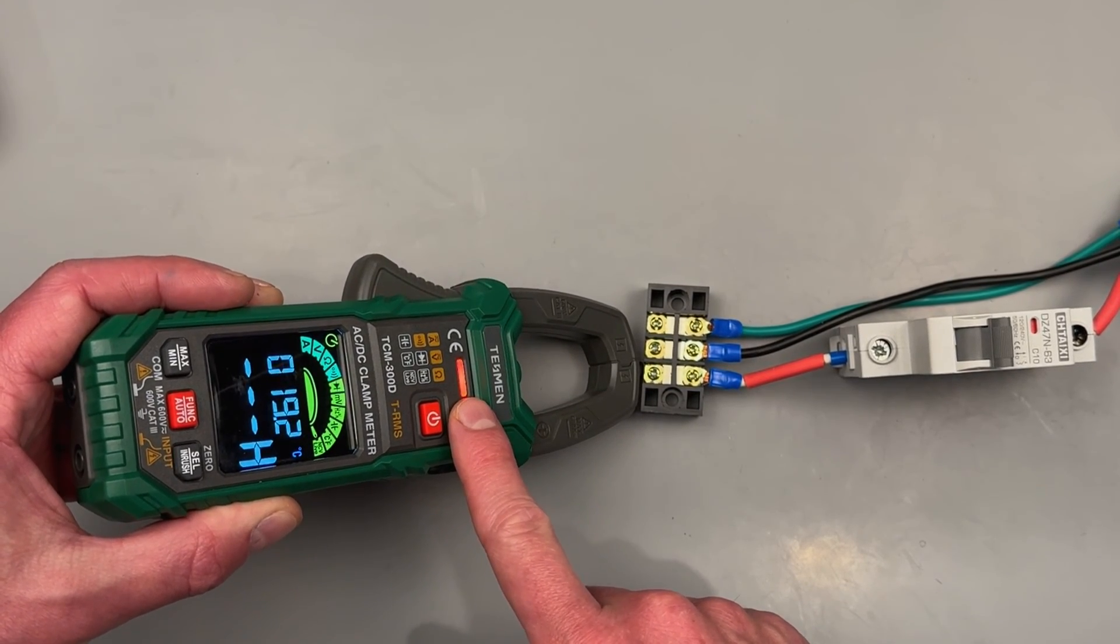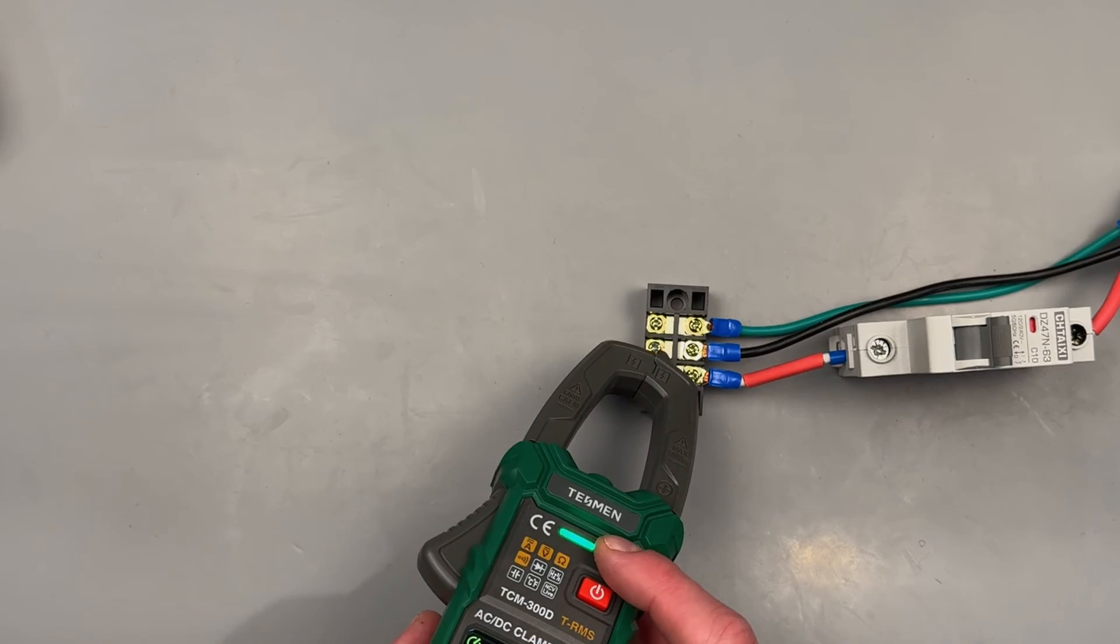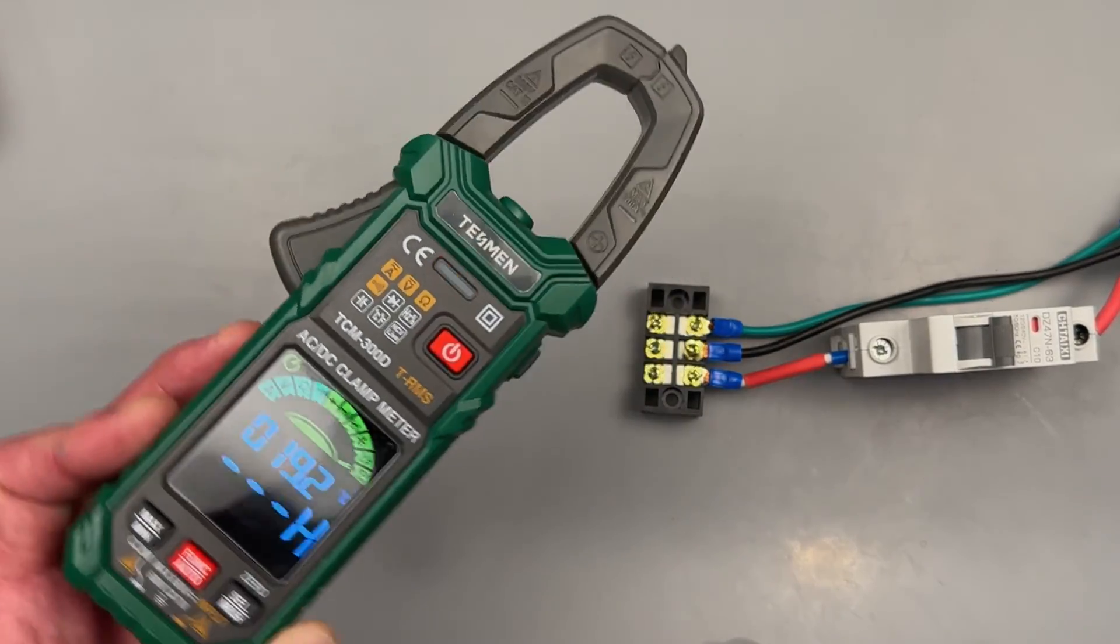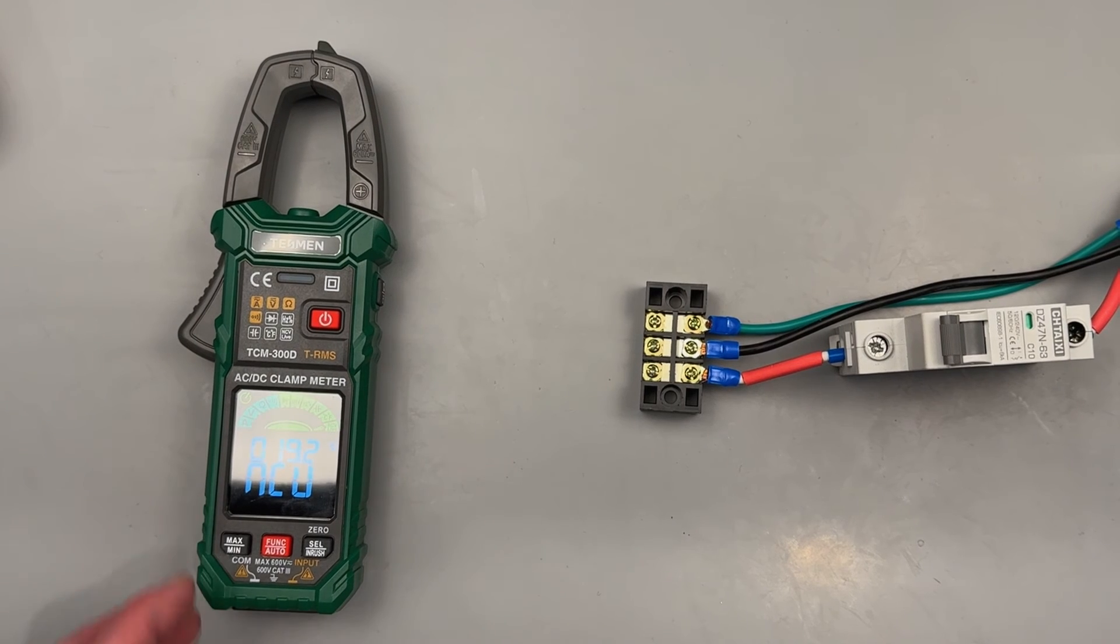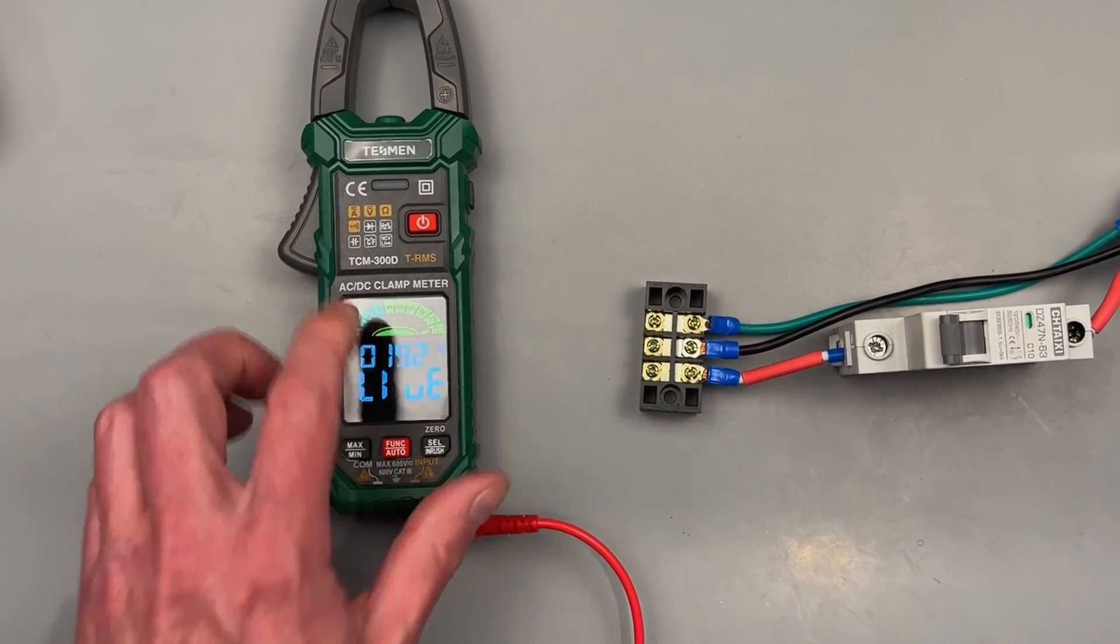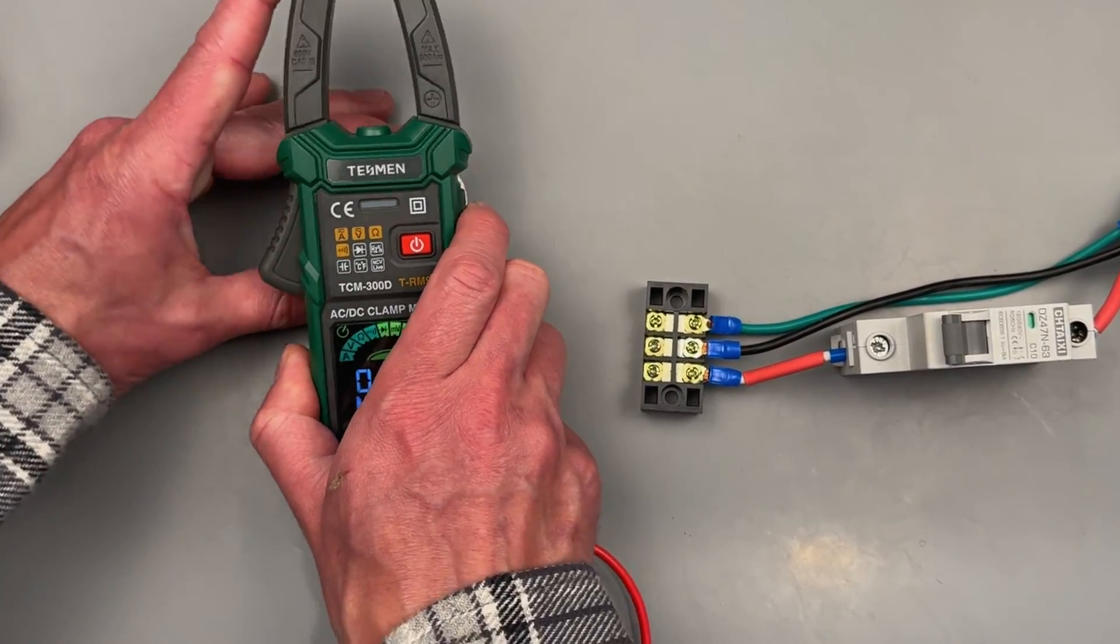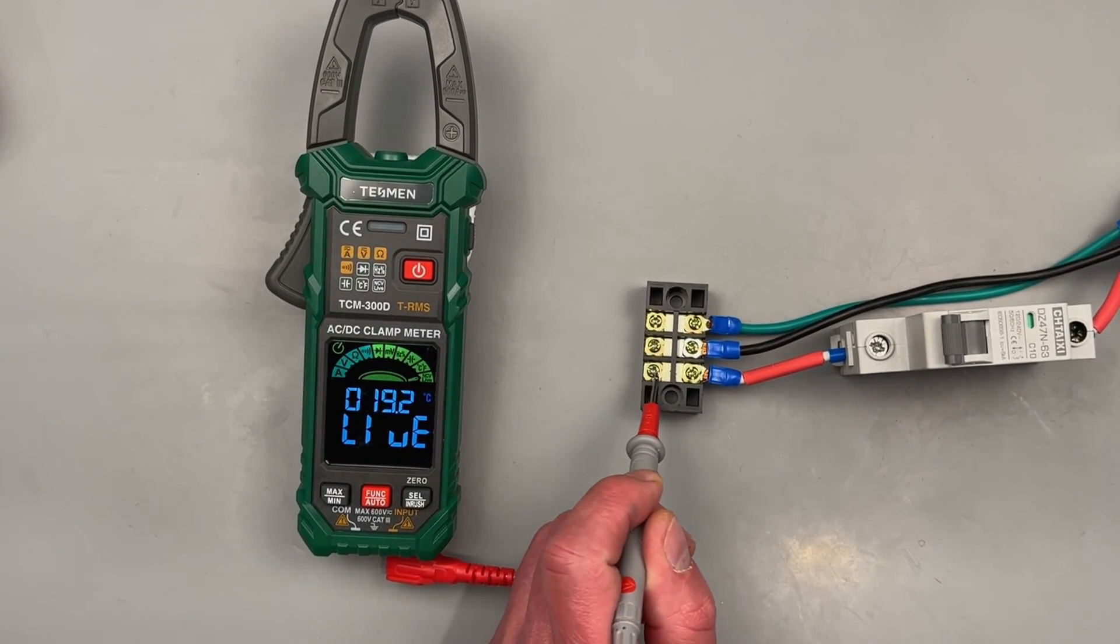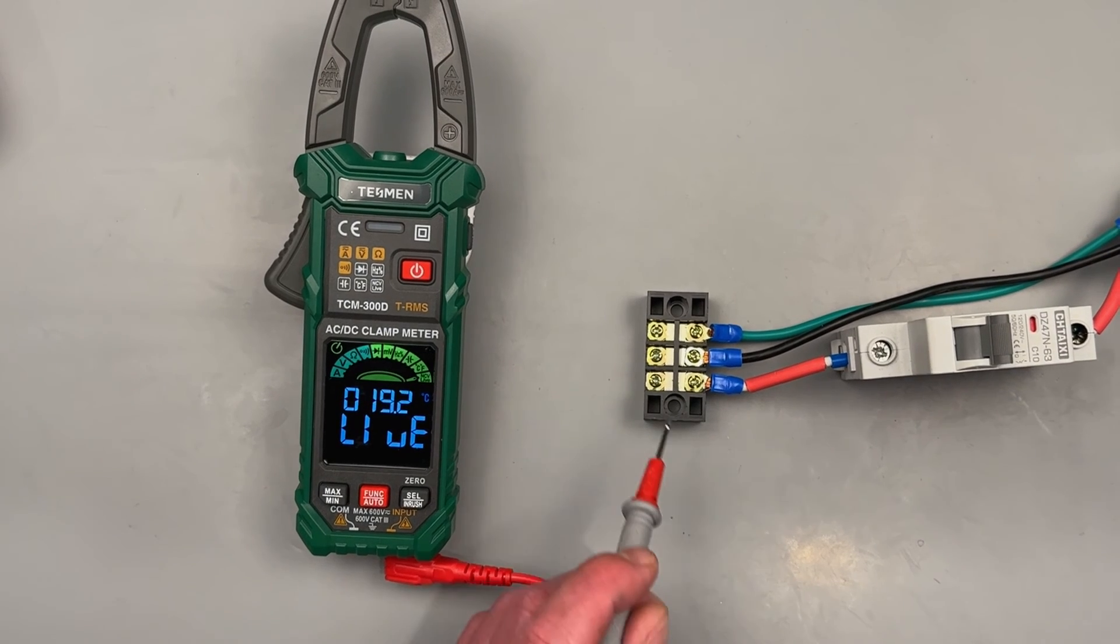And then finally we have our non-contact detection. So that'll tell us if we're getting to a circuit that's live, red indicator, or if it's dead. Now non-contact isn't exactly the most reliable. That's what the live setting is for. You can go ahead and plug in a lead, hit selection, you'll see the live get brought up, and this way we're actually making contact with some kind of conductor and it's telling us if it's alive or not.